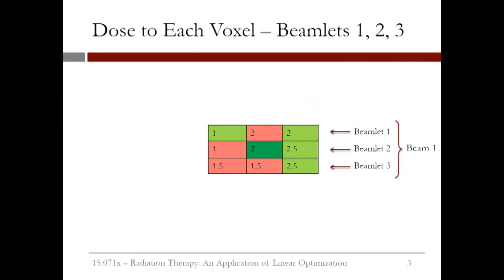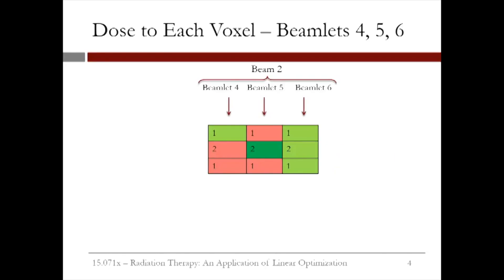We know the dose that each beamlet gives to each voxel at unit intensity. This table shows the dose that each beamlet in beam one gives to the voxels — remember that this is at unit intensity. If we double the intensity of the beamlet, we double the doses. The dose to each voxel can depend on how far the beamlet has to travel or the type of tissue it travels through. Similarly, we know the dose that each beamlet in beam two gives to each voxel, again at unit intensity. The dose depends on the direction of the beam and what it travels through.